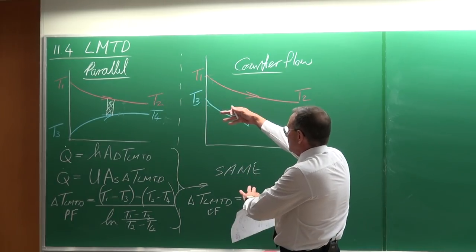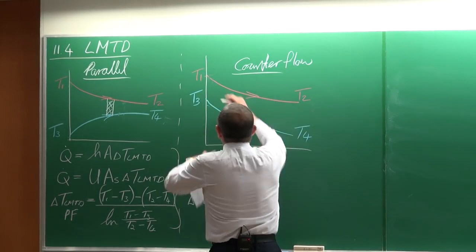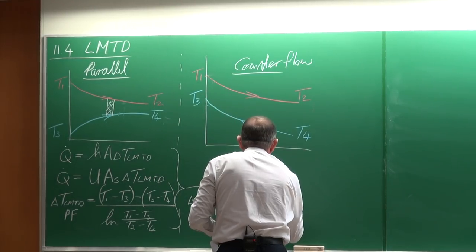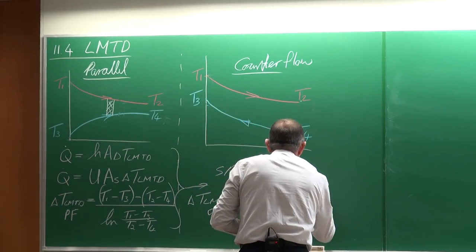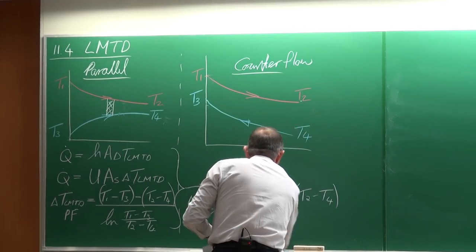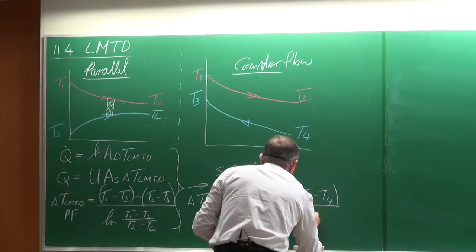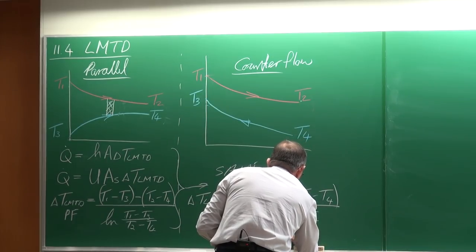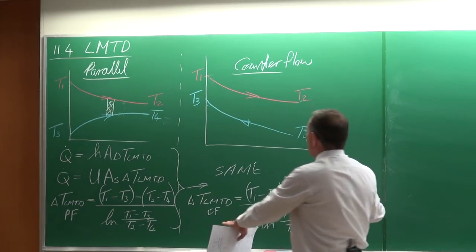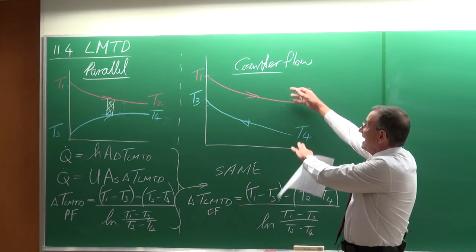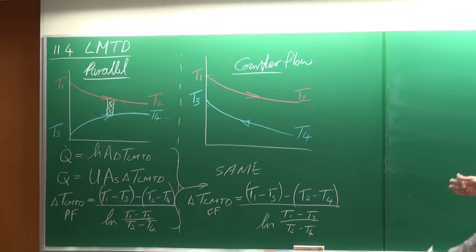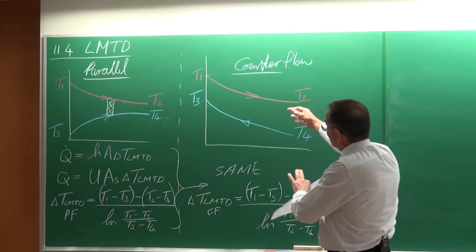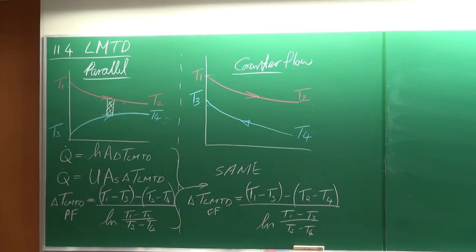Let's calculate the LMTD for counter flow. It is T1 minus T3, minus T2 minus T4, divided by the natural log of those two terms. So these two LMTDs are exactly the same expression, but it depends on the nomenclature you use. If you do the sketch, it is very simple to ensure you treat it correctly.